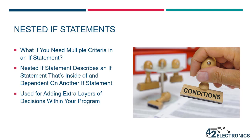In lesson A14, you learned to structure simple if statements in Python. But what happens if you need to have multiple criteria? For example, if you only wanted to print a receipt message if the sale value was $1 and the item was red, for this you would need to use a nested if statement. A nested if statement describes an if statement that's inside of and dependent on another if statement. This can be used to add extra layers of decisions that you might want to make happen in your program.